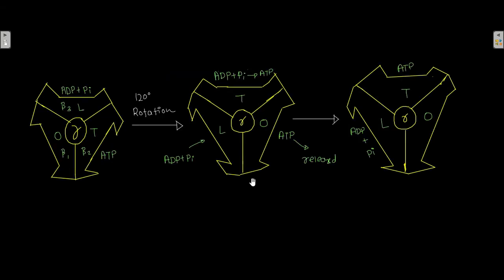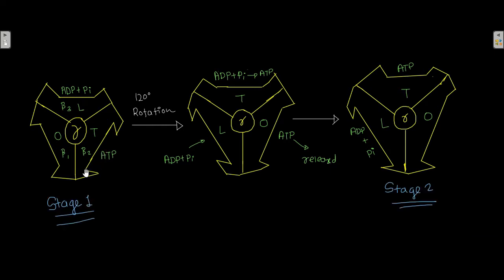This diagram represents the binding change mechanism of ATP synthesis from ADP and Pi by the F0-F1 complex. As you can see, the molecule contains three binding sites. There are three states of these binding sites: O for open state, L for loose state, and T for tight state.